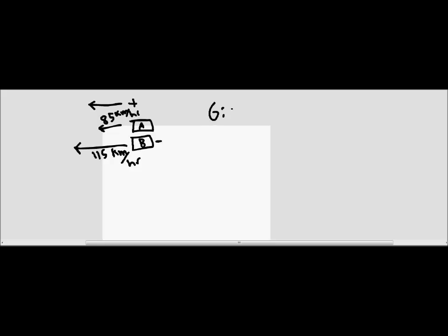For our givens, we have the velocity of A, which is 85 kilometers per hour; the velocity of B, which is 115 kilometers per hour; and the change in X, which is 16 kilometers. Using this, we're going to be able to solve the problem.